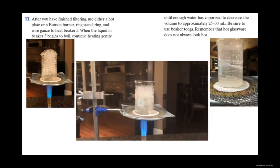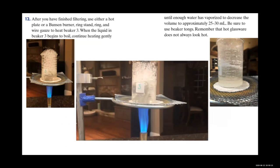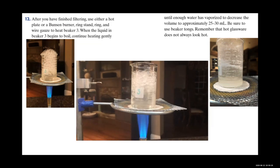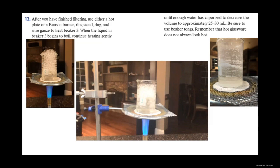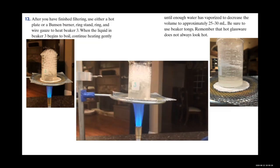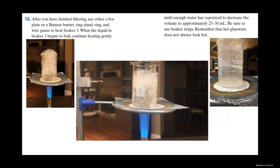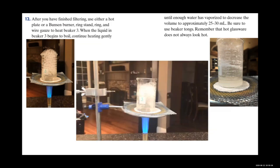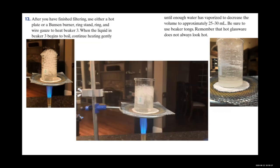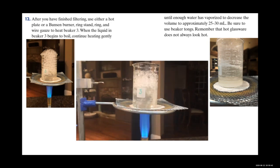After filtering, use a hot plate or Bunsen burner with a ring stand and wire gauze to heat beaker 3. When the liquid begins to boil, continue to gently heat it until enough water has vaporized to decrease the volume to approximately 25–30 mL. Be sure to use beaker tongs — remember that hot glassware does not always look hot.